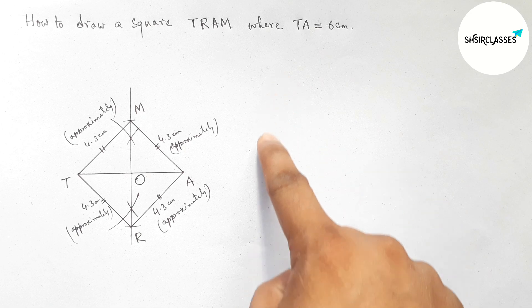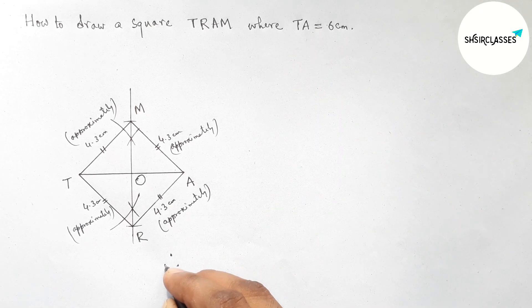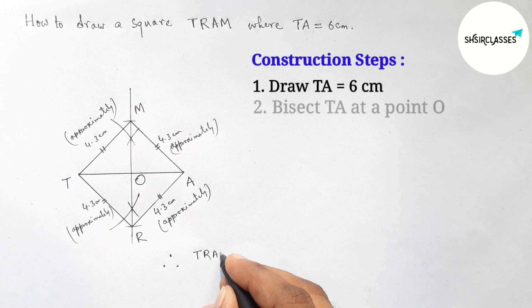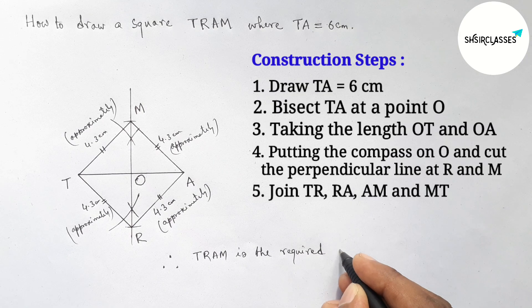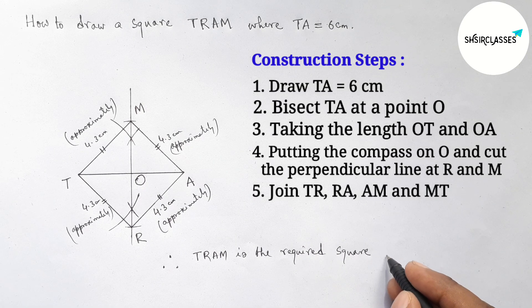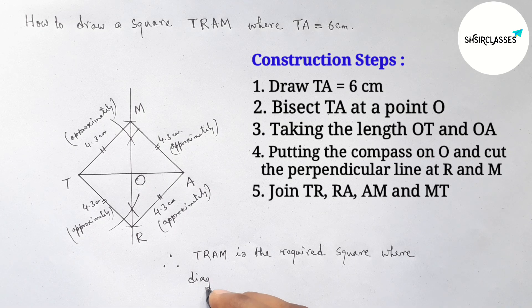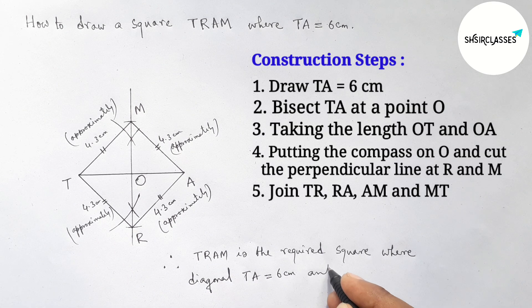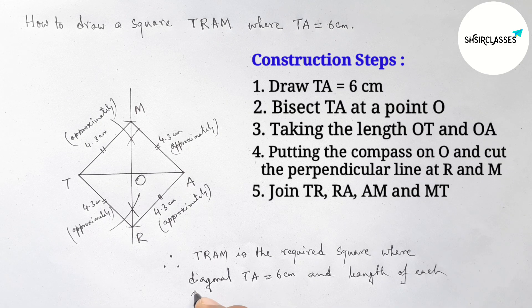So length of each side of the square 4.3 centimeters approximately. Now I'm going to write down here all the construction steps. And now therefore, TRAM is the required square where TA equal 6 centimeters, and TA is the diagonal of the square. So TA equal 6 centimeters and the length of each side of the square equal 4.3 centimeters approximately.